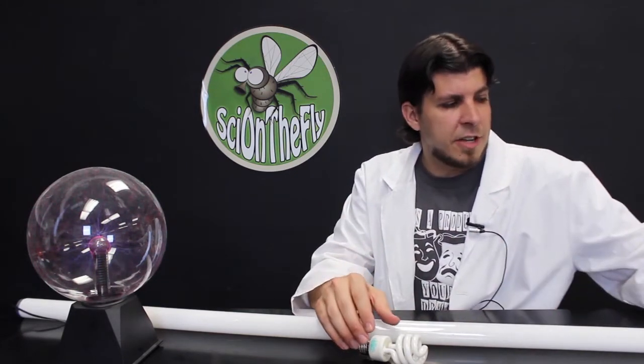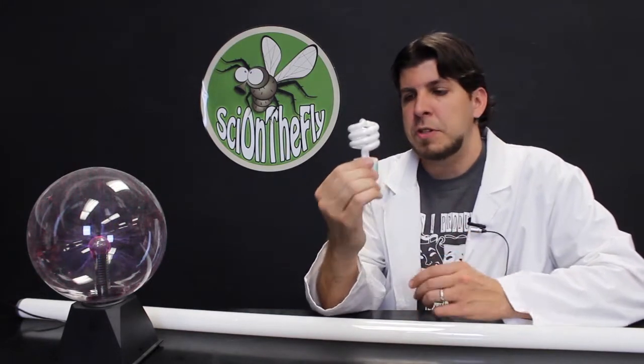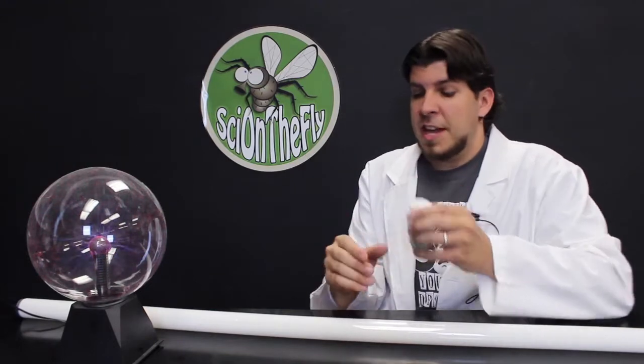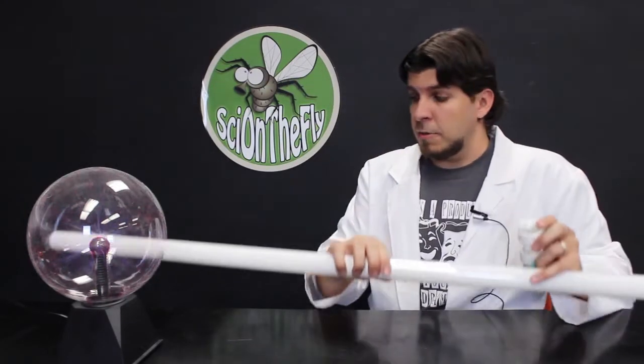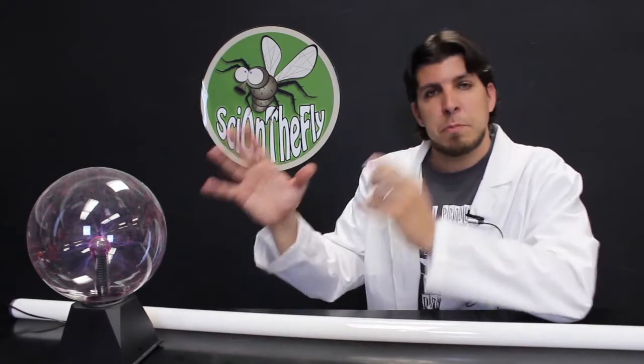That's where scientists have come together with this. You've probably seen these around. These are called CFLs or Compact Fluorescent Light Bulbs. The way these work is the exact same way as these tubes work that you're probably familiar with as well, and they work exactly the same as the plasma balls.